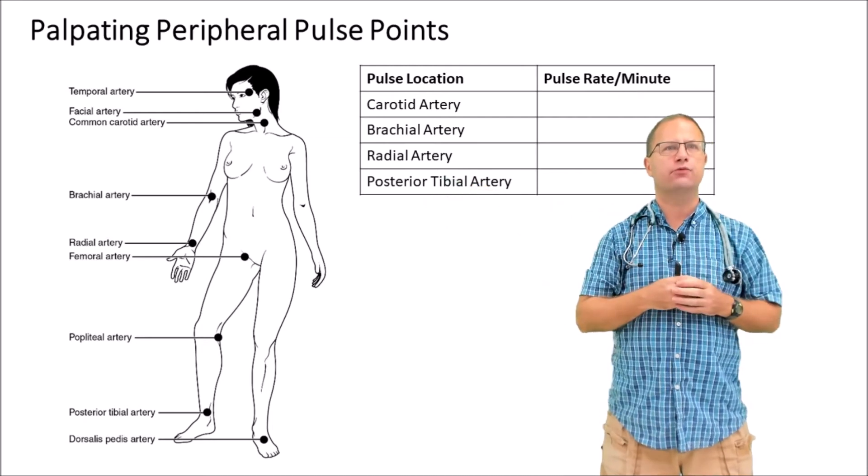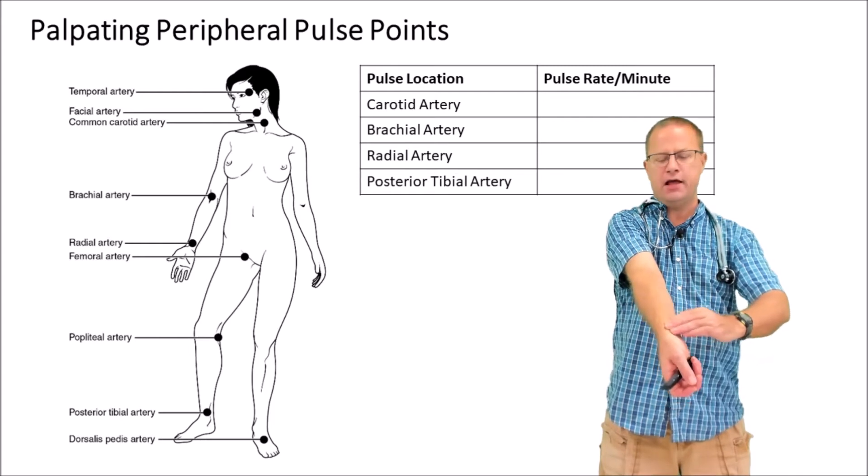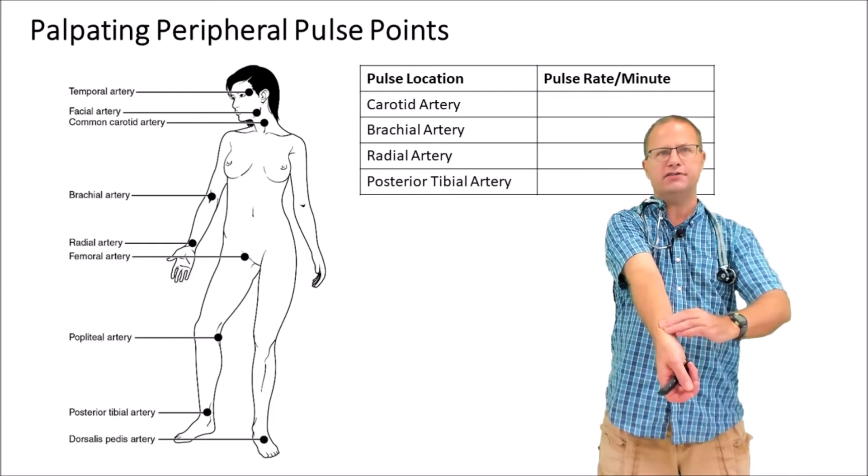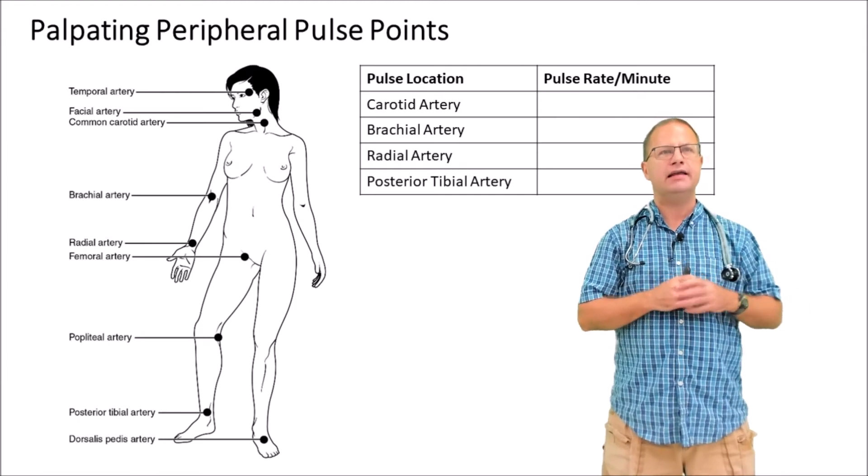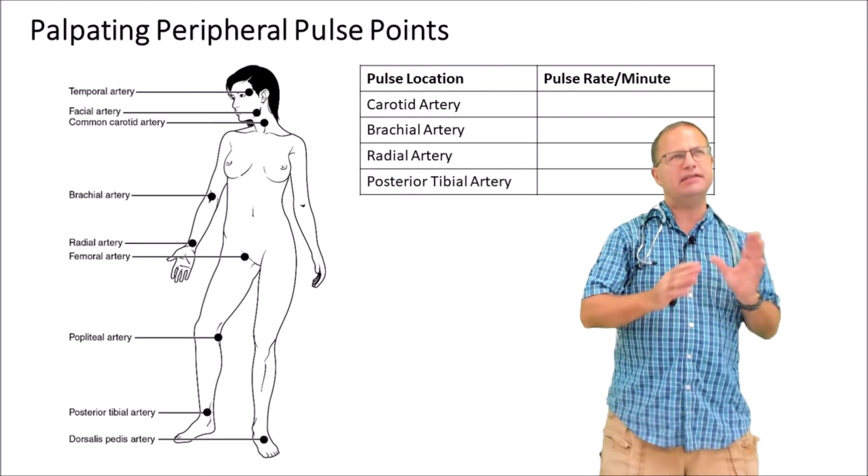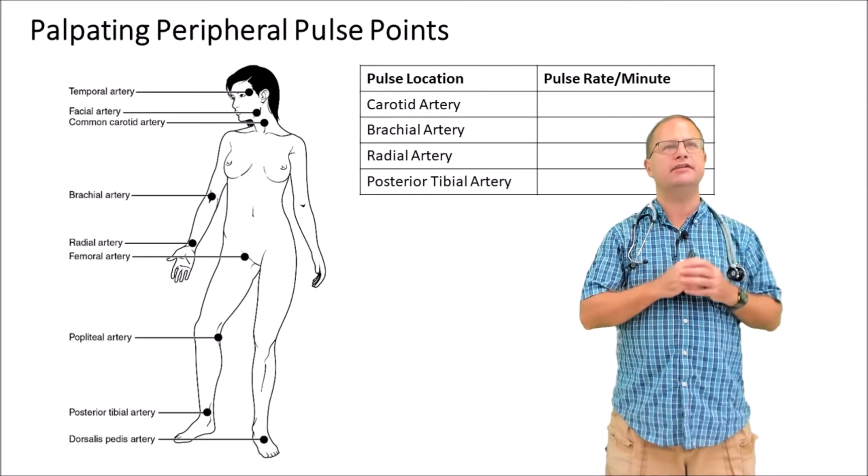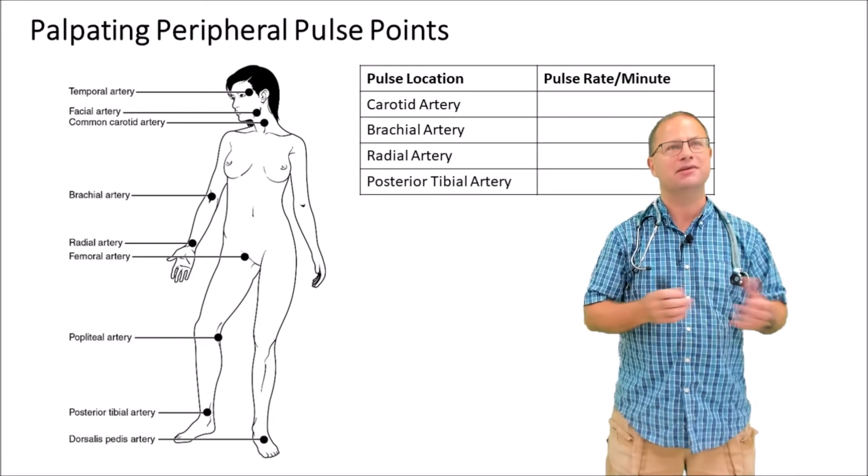We're then going to move to the radial artery which you can detect using two to three fingers placed along the radius bone. The last one is the posterior tibial artery, just posterior to the medial malleolus along the ankle bone. It's a little difficult to detect but the pulse rate should be the same at all four points.